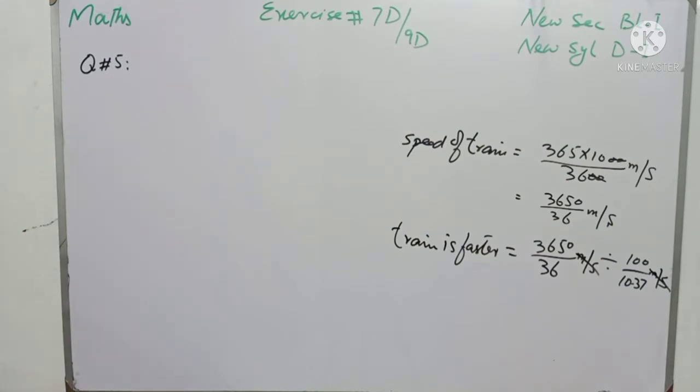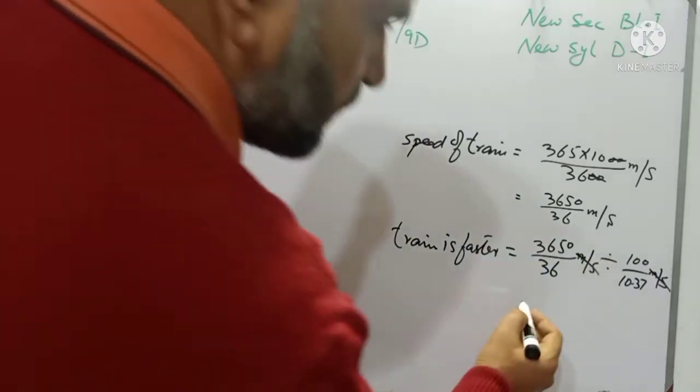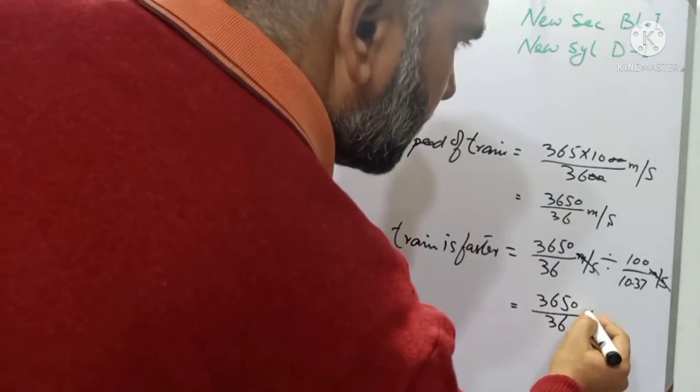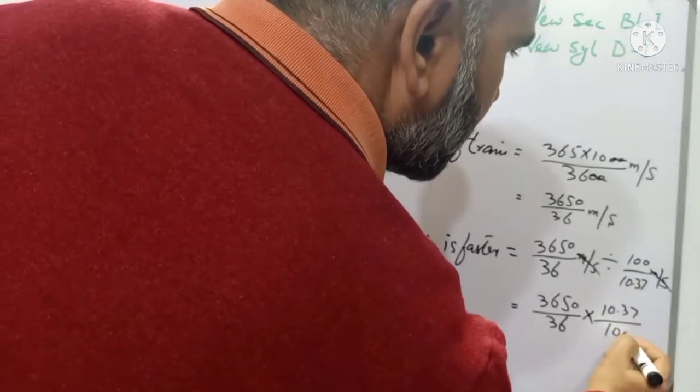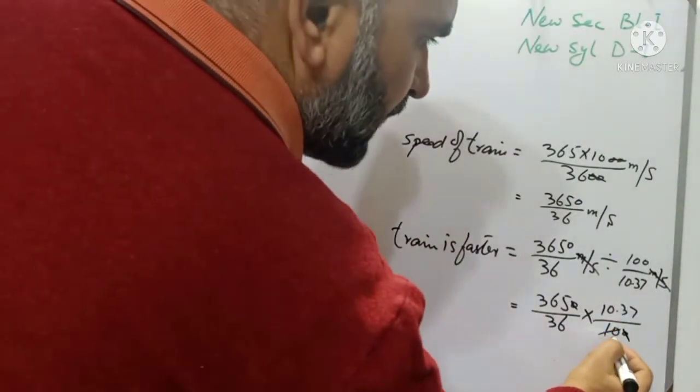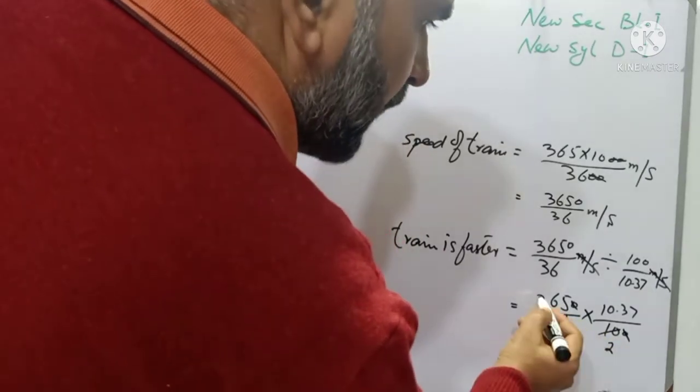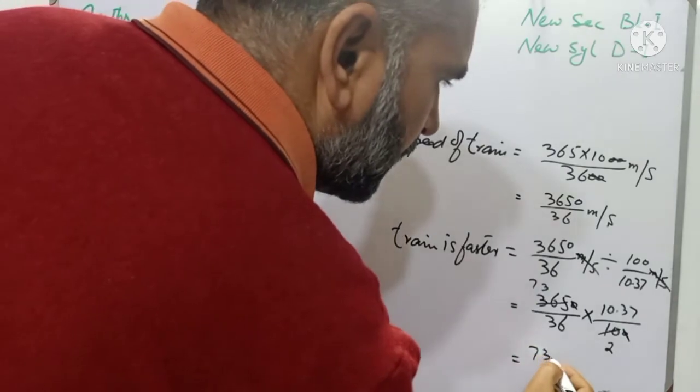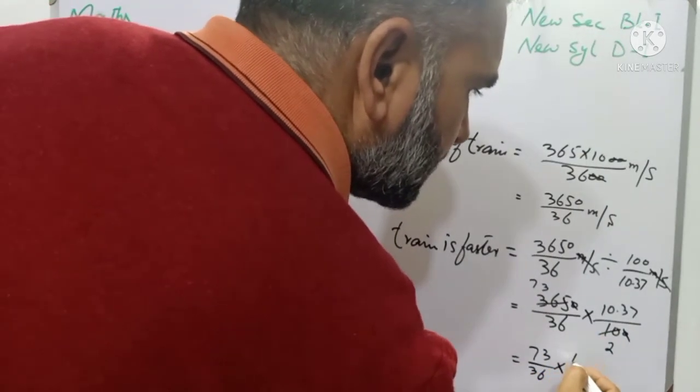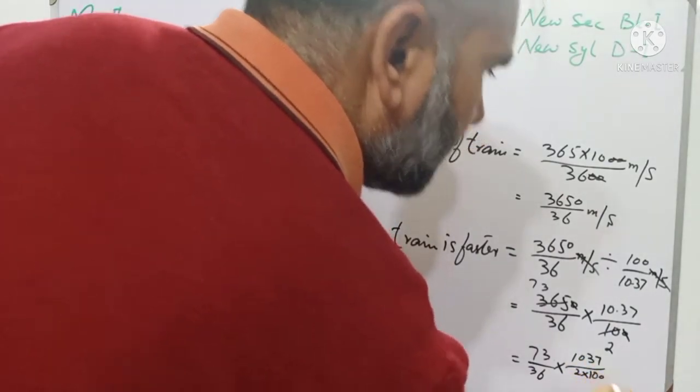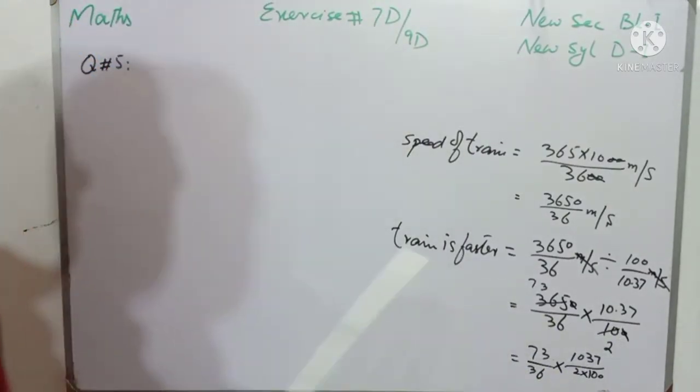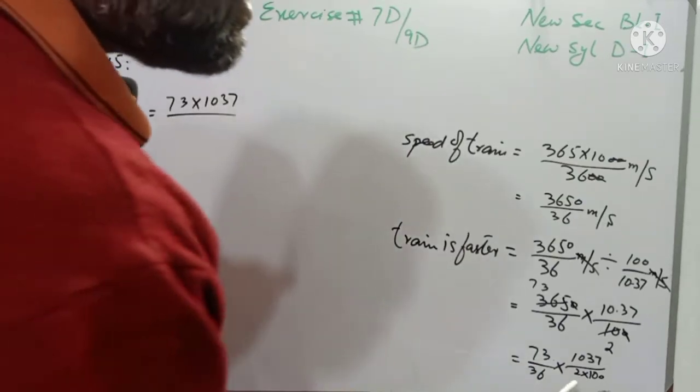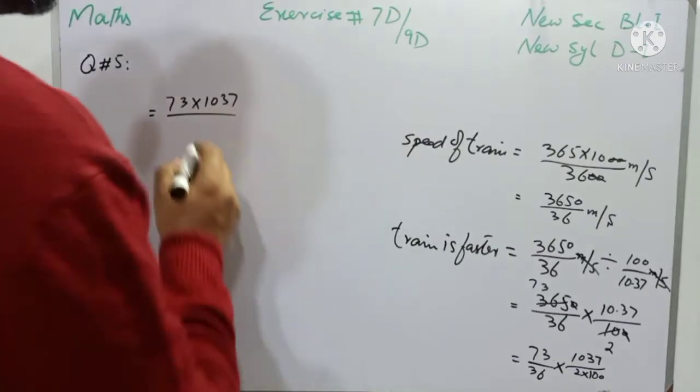And students, we will reciprocal 100 over 10.37. Because it is dividing, and when we convert this division into multiplication, it is written as 3650 over 36 multiply by 10.37 over 100. Last zero will be cancelled with last zero. And students, two 5's are 10, and five 7's are 35, one carry, and five 3's are 15. And students, it is written as 73 over 36 multiply by 10.37 over 2 multiply by 100. I have converted this decimal into fraction, and it is written as 73 multiply by 10.37 over 36, 2's are 72, and 72 multiply by 100 means 7200.